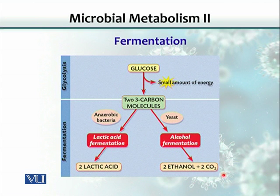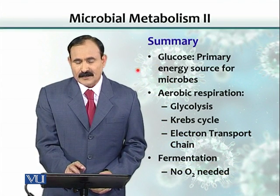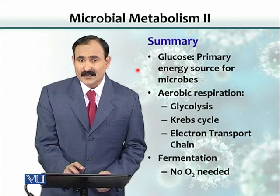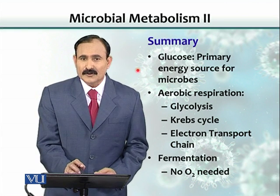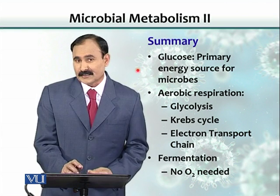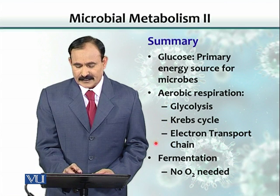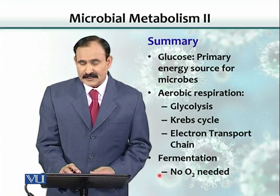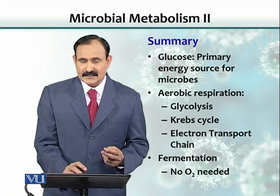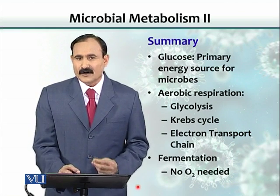Different bacteria use fermentation to produce many chemicals for human or industrial use. In summary, glucose is the primary source of energy for microbes, though bacteria can also utilize proteins and lipids. Aerobic respiration involves three steps: glycolysis, the Krebs cycle, and the electron transport chain where ATP is derived. Fermentation is a two-step process where glycolysis is followed by conversion of pyruvic acid into end products, without involvement of oxygen.